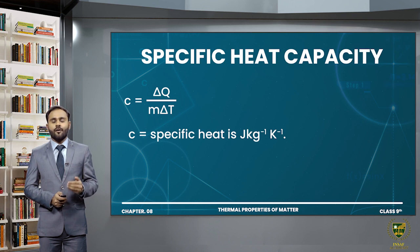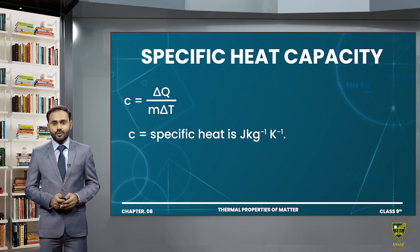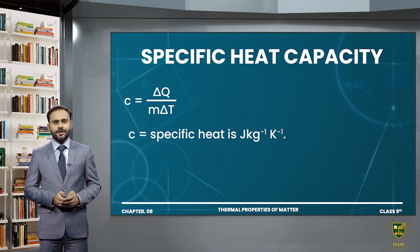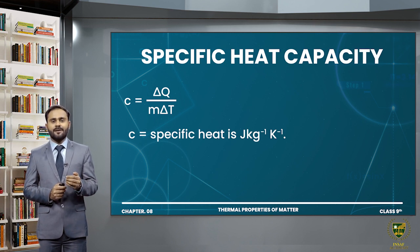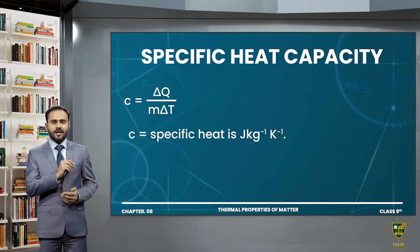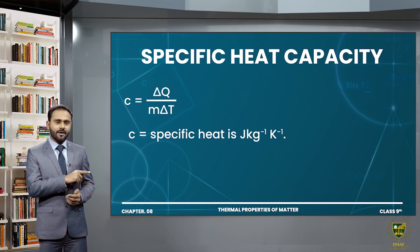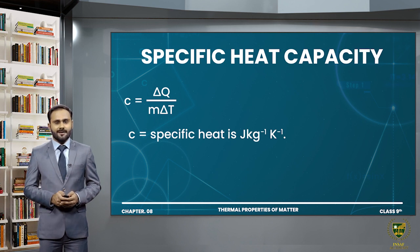Yahan se hum specific heat capacity ka formula bhi bana sakte hain. Jaise ke C, M ke saath yahan par multiply ho raha hai, toh M aur delta T ko aap simply Q ke saath jakar divide kar dein. So mathematically, C is equal to delta Q over M·delta T. Ab hum baat karte hain iske unit ki — delta Q heat, jo ke aap measure karte hain joules mein; mass measure in kilograms; and delta T temperature measure in Kelvin. So simply hum iski jagah ke unit put karte hain — so joule per kilogram per Kelvin. That means ke specific heat capacity ka unit ho gaya joule per kilogram per Kelvin.